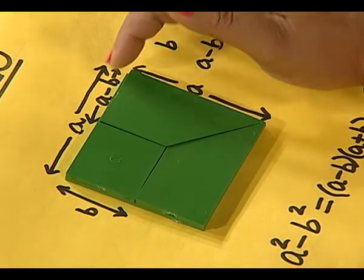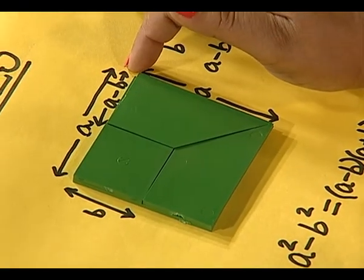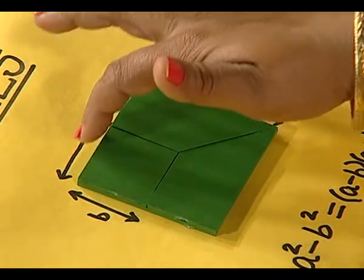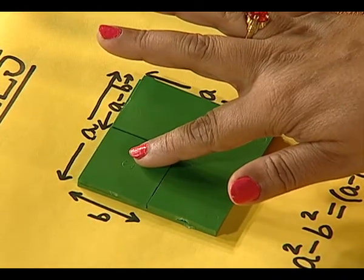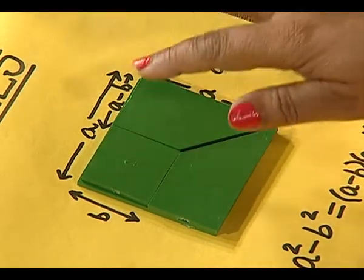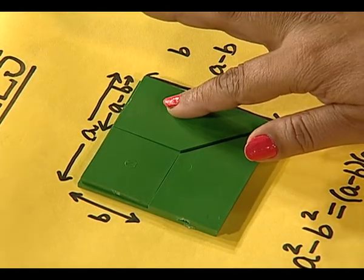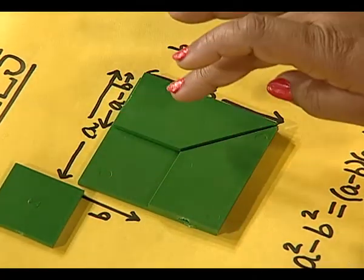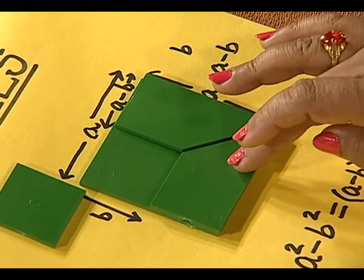Now, this length here is obviously a minus b and the cutout here of length b units is removed. So we have a minus b here. Now we should calculate the area of this left out portion.